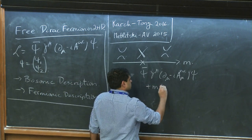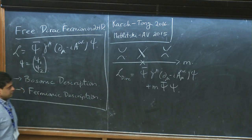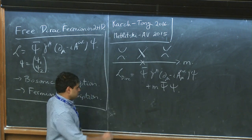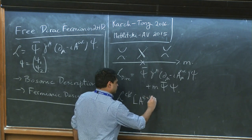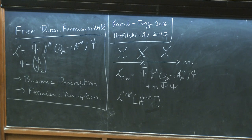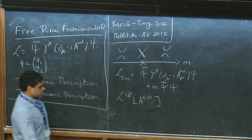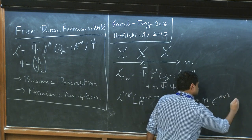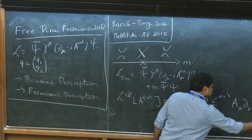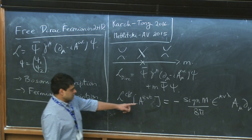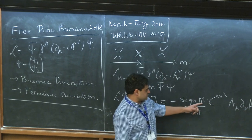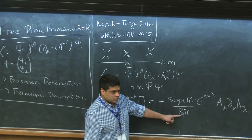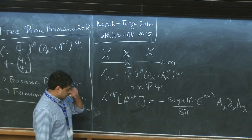We add to our Dirac Lagrangian an external electromagnetic field to keep track of the global U(1) charge. In one of these gapped phases, all excitations are gapped. We can integrate them out and write down an effective action just in terms of the external electromagnetic field. What you're going to get is a Chern-Simons term for the external electromagnetic field, and the sign accompanying it is the sign of the mass term — either plus or minus. The difference between the plus and minus mass terms is 1 over 4π.